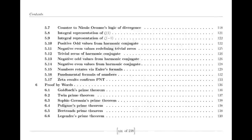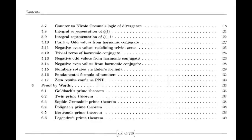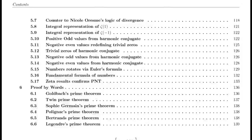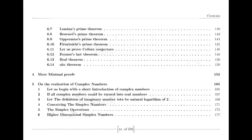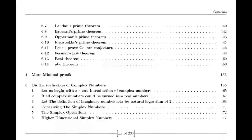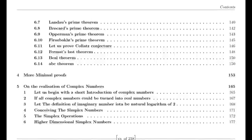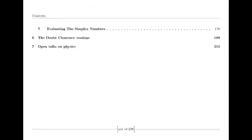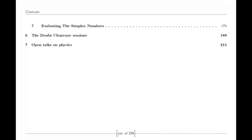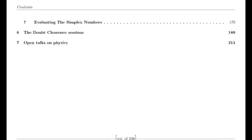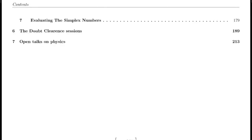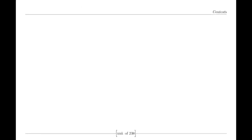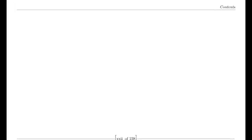Riemann was also influenced by the Dirichlet eta function, defined by an alternating series. This function is closely related to the zeta function and provides valuable insights into its behavior, particularly for values of s less than one. The relationship between the eta function and the zeta function is encapsulated in a simple formula involving the gamma function and powers of two, which helps in understanding the zeta function's properties across different regions.